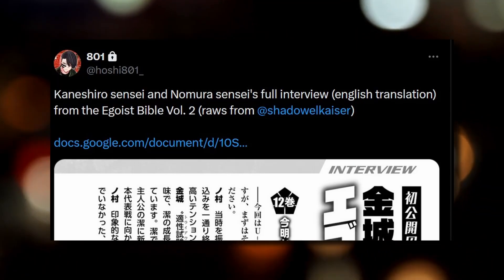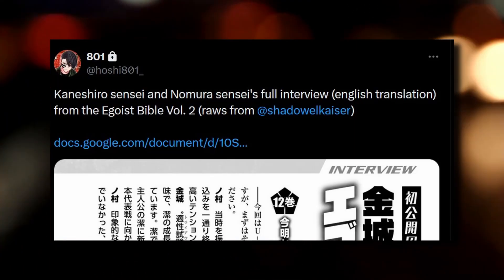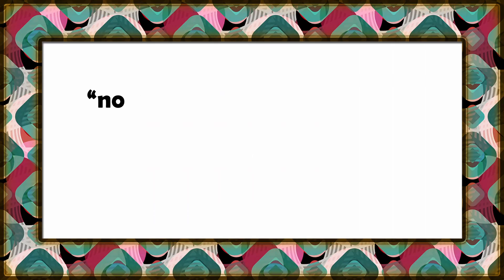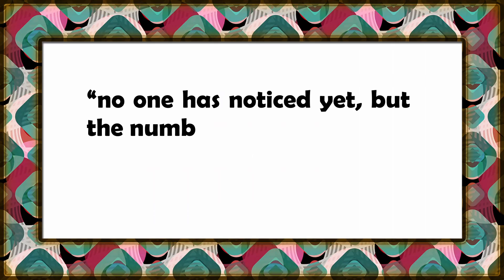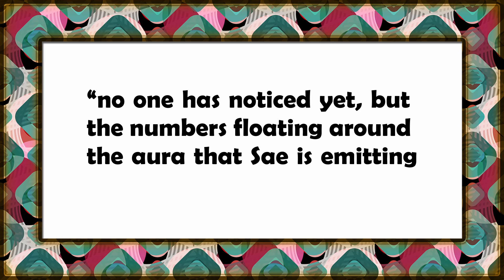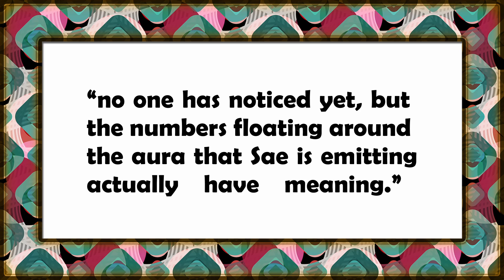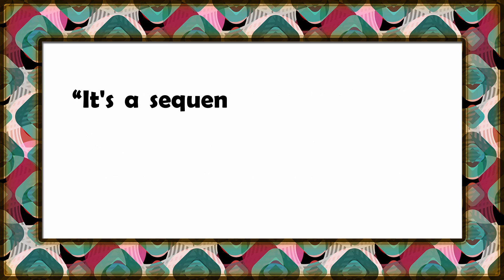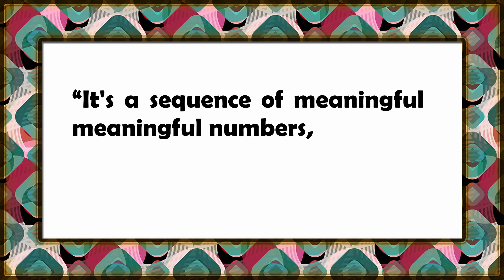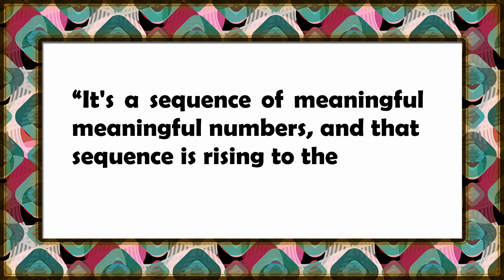While reading this interview, one section in particular jumped out to me. With thanks to Hoshi Edo 1 for providing the translations, Nomura mentions that no one has noticed yet, but the numbers floating around the aura that Sae is emitting actually have meaning. Kaneshiro then chimes in: 'It's a sequence of meaningful numbers, and that sequence is rising to the surface.'